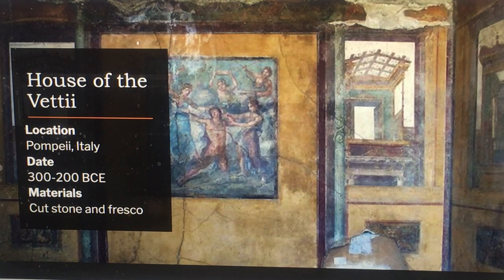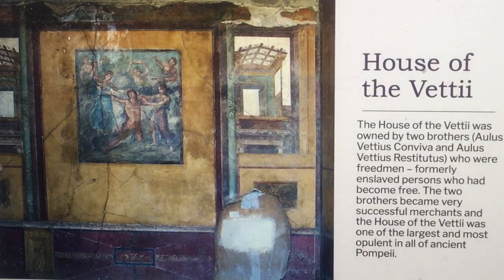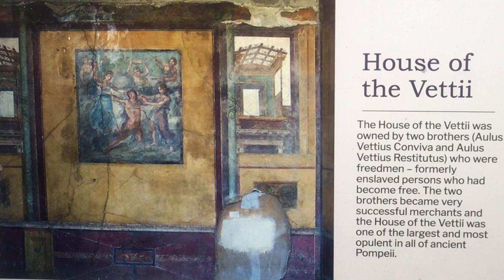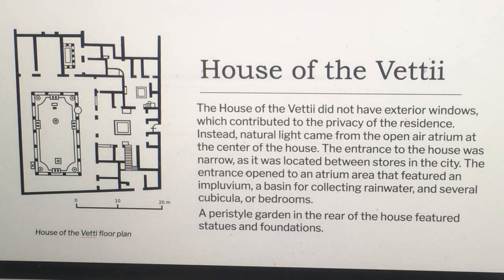The House of Veti is located in Pompeii, approximately 300 to 200 BCE. The materials are cut stone and fresco — frescoed paintings on wet plaster. The House of Veti was owned by two brothers, Aulus Vettius Conviva and Aulus Vettius Restitutus, who were freed men — formerly enslaved persons who had become free. The two brothers became very successful merchants, and the House of Veti was one of the largest and most opulent of all of ancient Pompeii. The house did not have exterior windows, which contributed to the privacy of the residents.